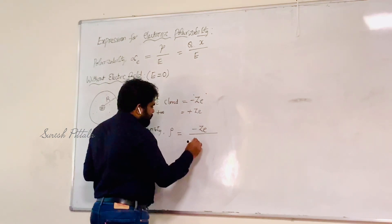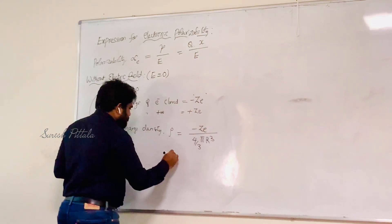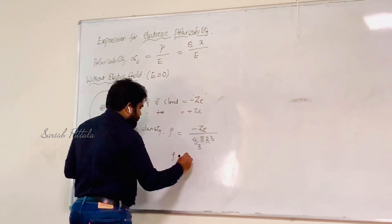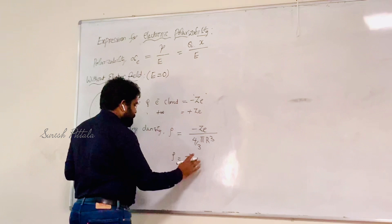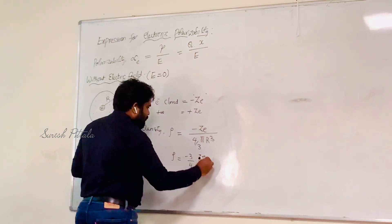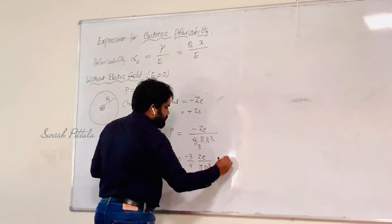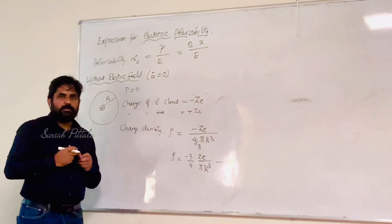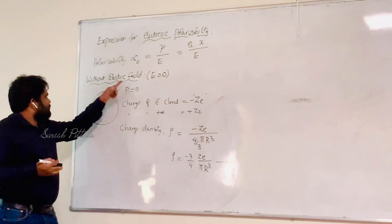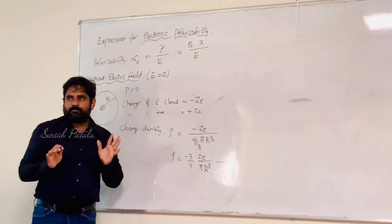So the charge density rho for the electron cloud is: rho = minus ZE divided by (4/3)πR³, which simplifies to rho = minus 3ZE divided by 4πR³.